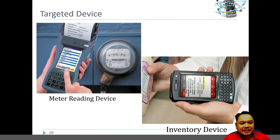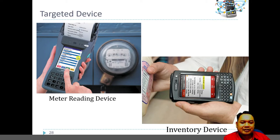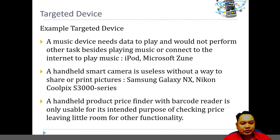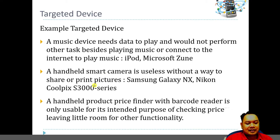Other targeted devices include barcode scanners, most of which are powered by Windows Mobile or Windows CE, and meter reading devices powered by mobile operating systems such as Windows or Symbian (for previous generation devices). You should remember that targeted devices exist alongside general purpose devices. Examples of targeted devices include music devices like the iPod, handheld smart cameras such as the Samsung Galaxy NX or Nikon camera, and barcode scanners.